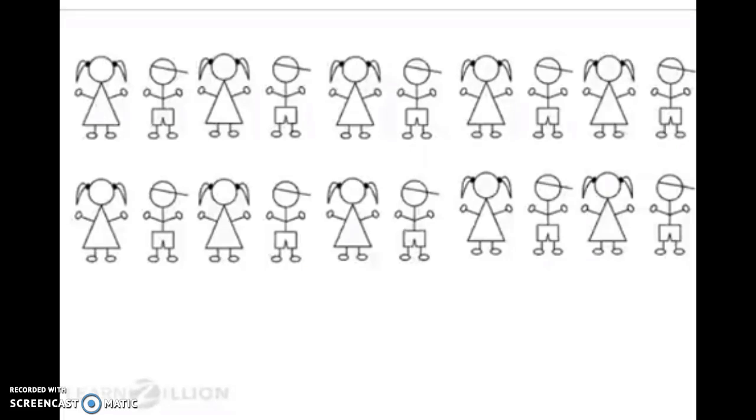this can be written as a division problem because we're taking a whole group, 20 students, and breaking that group into parts, five groups of a certain amount of students. So we want to solve for how many students are in each group.